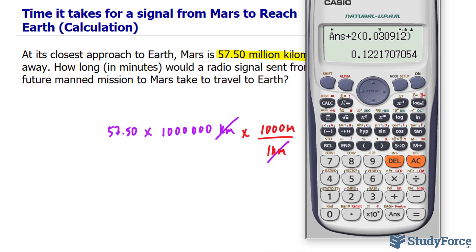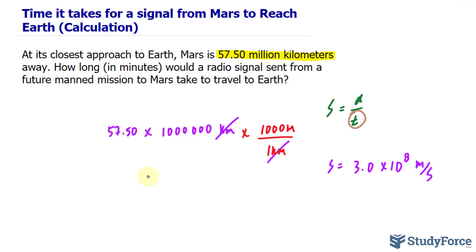And let's go ahead and use our calculator moving forward. We have 57.50 times 1 million, that's six zeros, times another 1,000. So, from Mars to Earth is 5.7 times 10 to the power of 10 meters away. I hope that gives you perspective as to why a manned mission to Mars is so difficult.